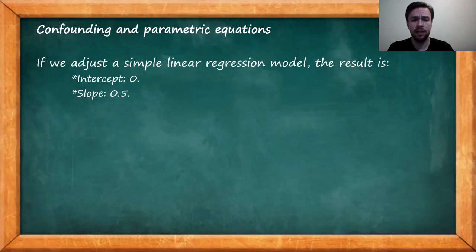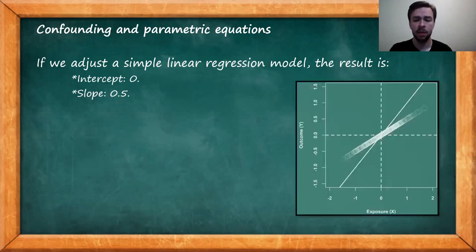So if we adjust a simple linear regression model to this data, the result will be an intercept of 0 and a slope of 0.5. We can clearly see this in this scatter plot, where we have the exposure in the x-axis, the outcome in the y-axis. Each circle indicates a data point and the solid line indicates the diagonal line, that is, the line that passes through the origin with a slope of 1. And we can clearly see that our points align in a line that has a slope that's about half of the diagonal line and the x-axis indicated by the horizontal dashed line, corroborating this numerical result.